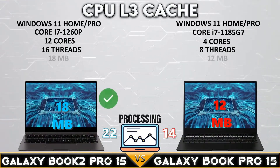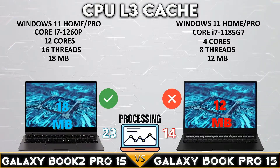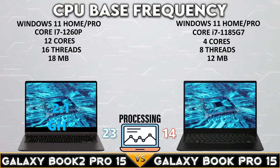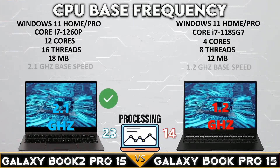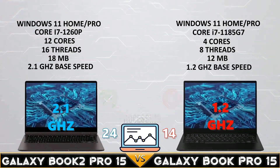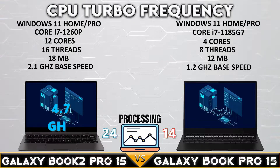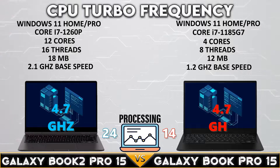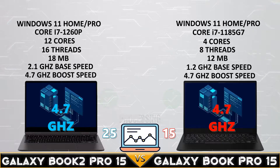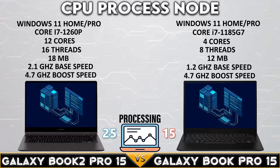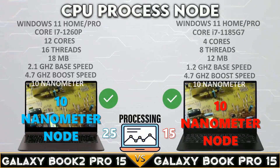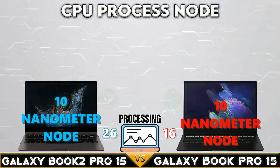The Book 2 Pro 15 2022 has 18 MB of L3 cache with a base clock of 2.1 GHz. Both devices have up to 4.7 GHz of CPU boost clock, and both laptops have a 10nm CPU process node.